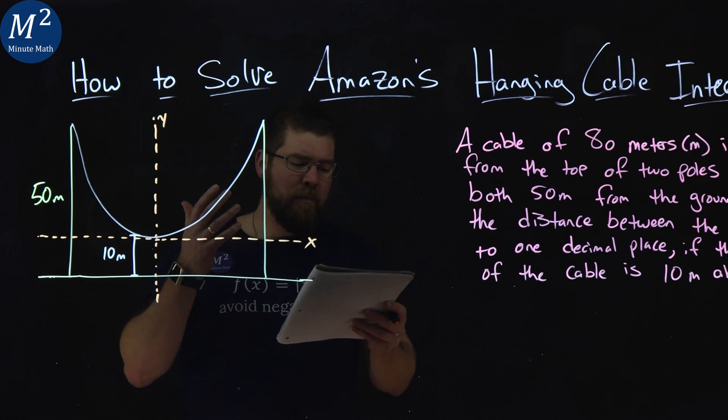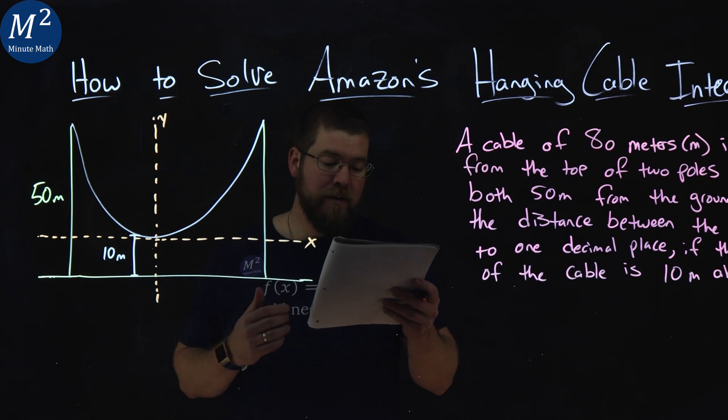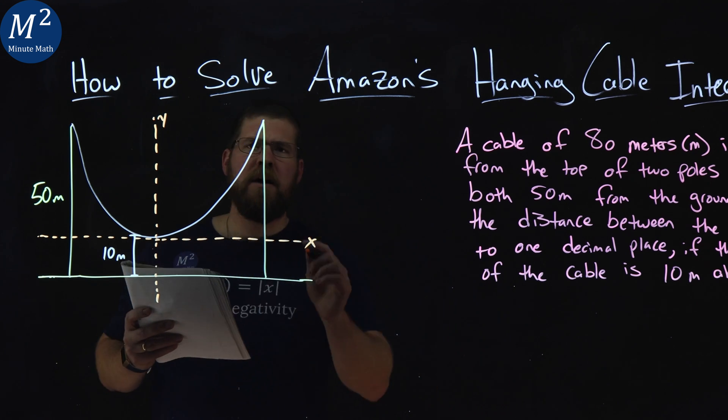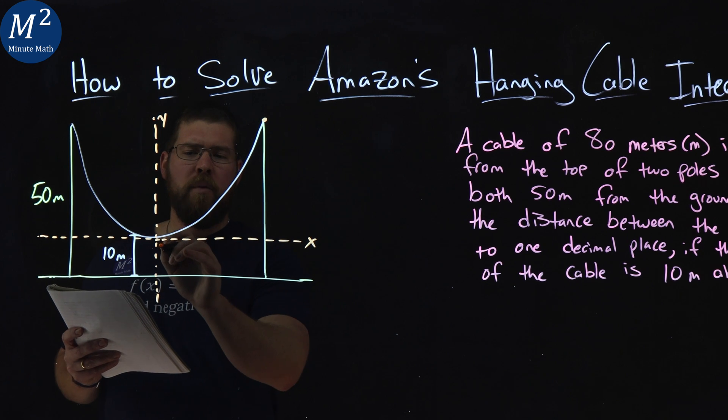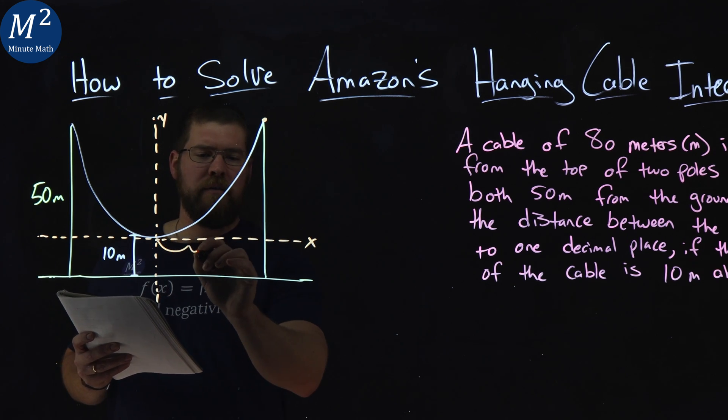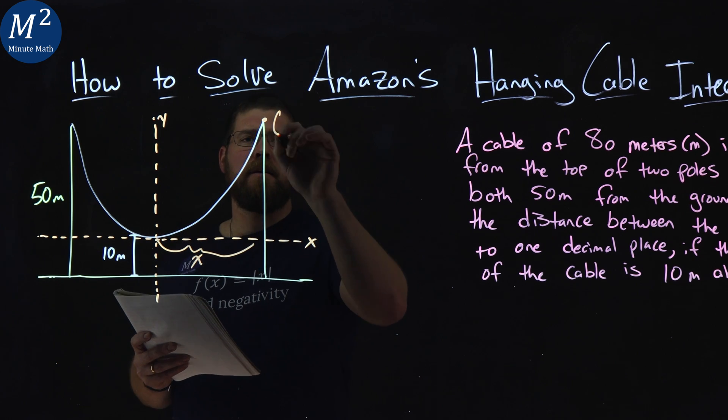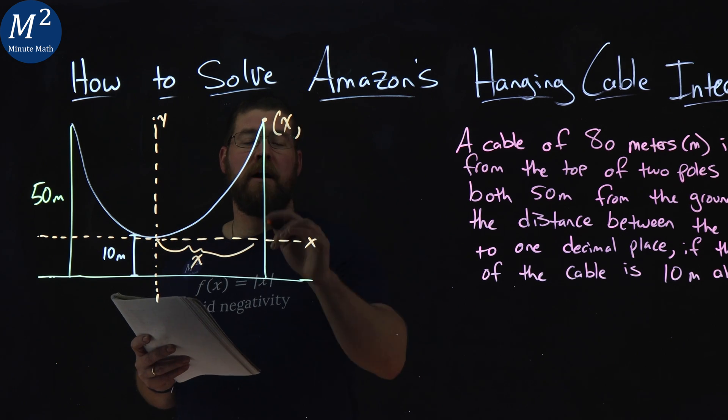And this formula we're going to end up using is called the general catenary equation. And so we have some coordinate points that might help us out here. We want to find what this length is called x.